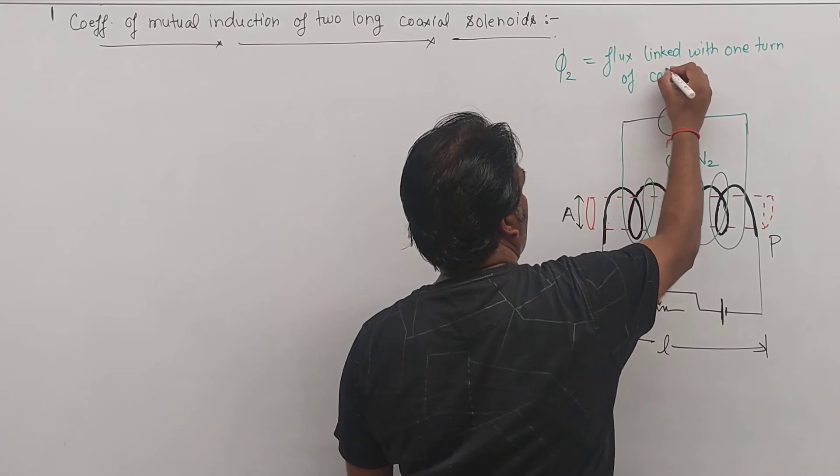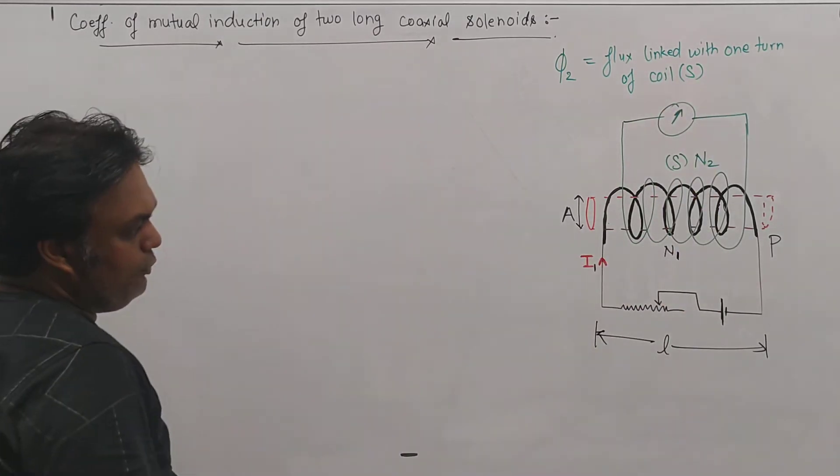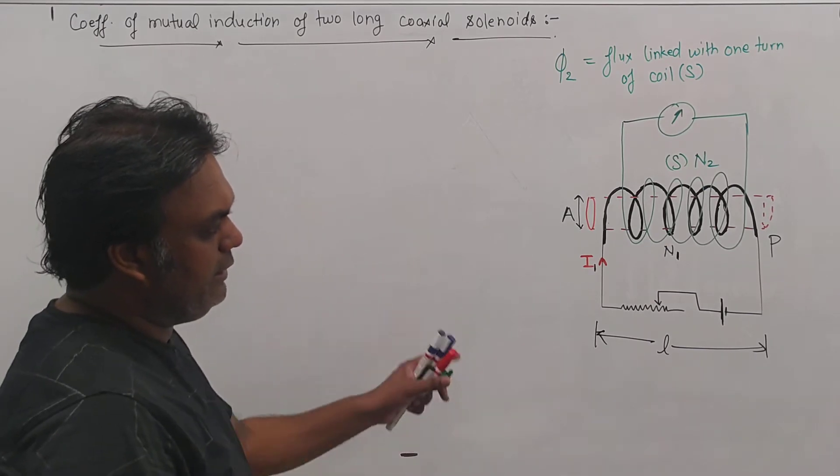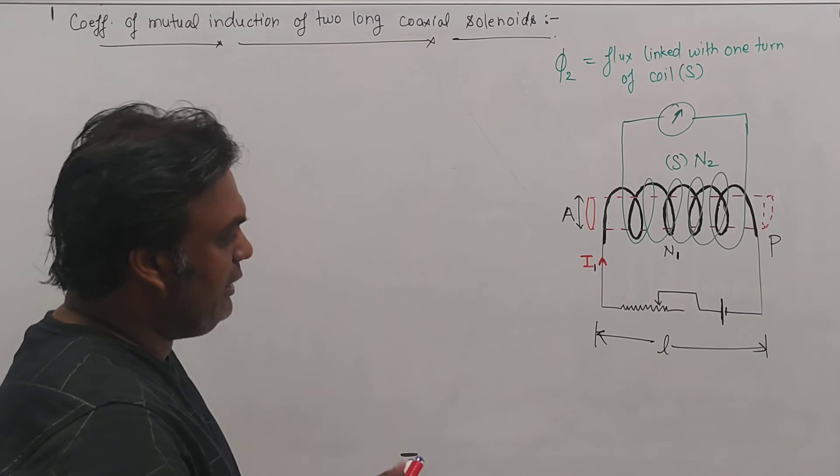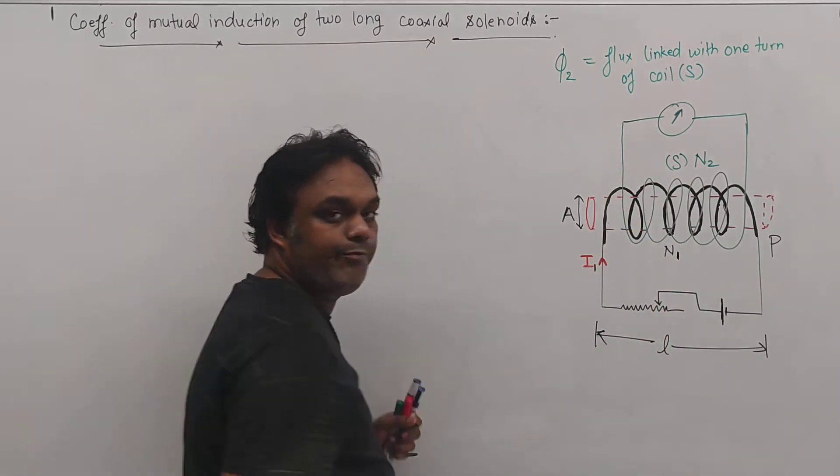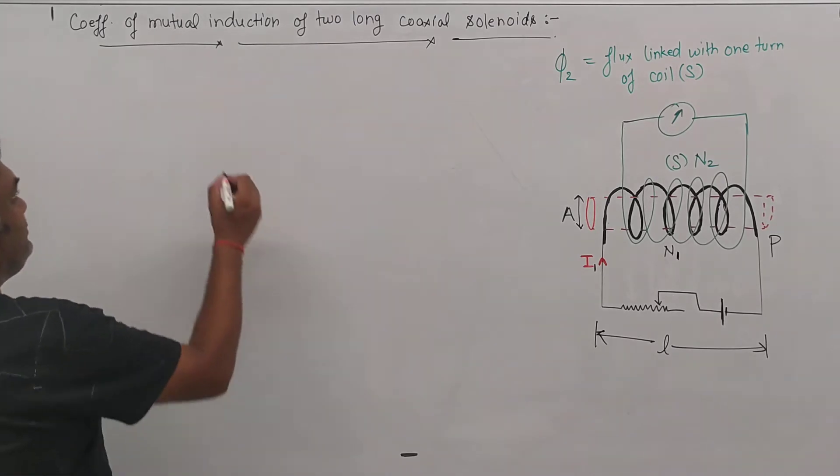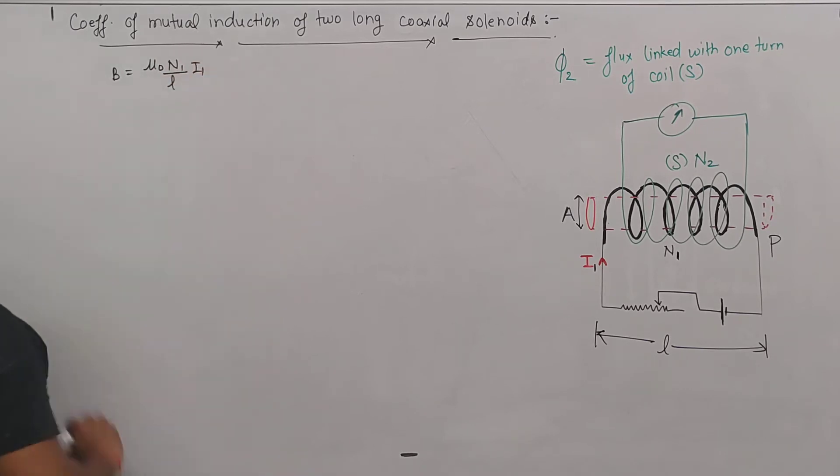So as the current is flowing in the primary solenoid or primary coil, magnetic field will be due to this primary coil. So the magnetic field is B = μ₀n₁i₁/l. This is the magnetic field.